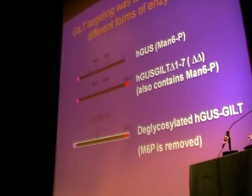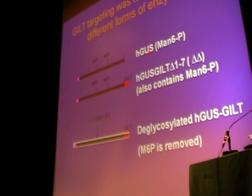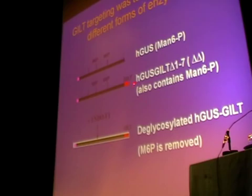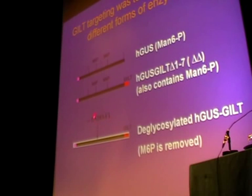GILT targeting was studied using three different forms of the enzyme. The first form is the wild-type H-GUS with a normal mannose-6-phosphate component. The second form was the H-GUS-GILT with the addition of the GILT tag. The third form was a de-glycosylated form of H-GUS-GILT in which we used endoglycosidase F1 to remove the mannose-6-phosphate, leaving only the GILT tag.